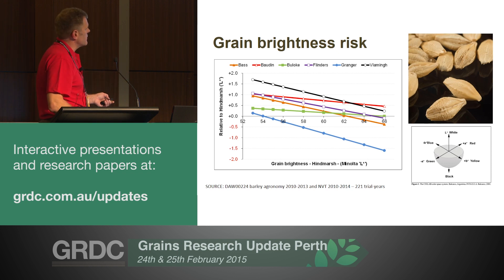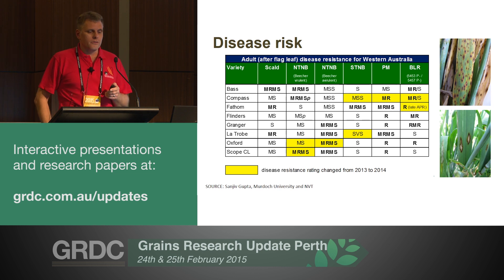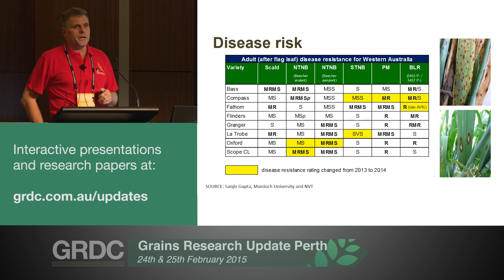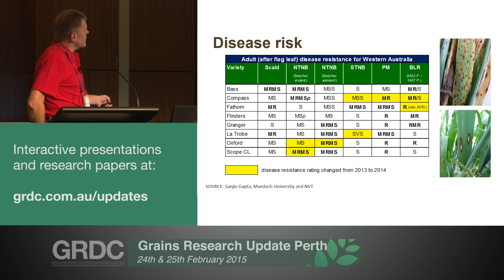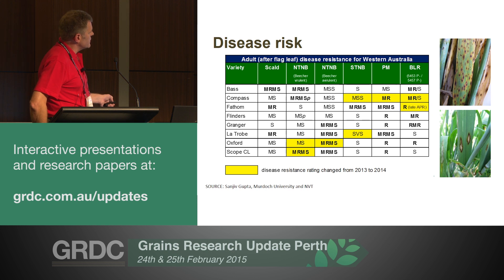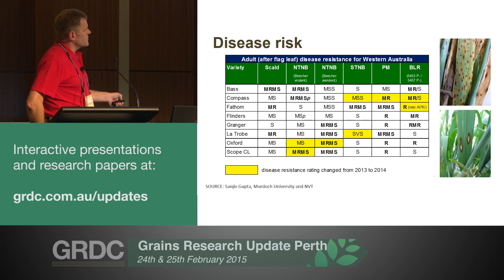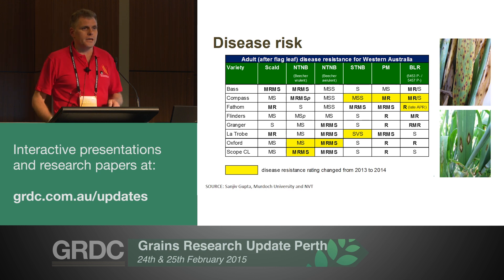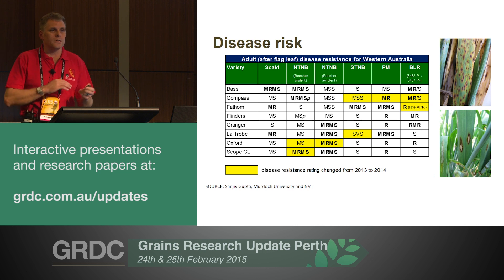Disease resistance is another trait to be aware of. Every variety has a weakness of some form. Granger is very good for barley leaf rust and powdery mildew but has a weakness for scald. Fathom is noted for its spot type net blotch resistance, but if you've got net form net blotch, there's a major risk. Latrobe is very sensitive to spot form net blotch. Bass and Compass are both sensitive to the new version of barley leaf rust. Understanding these weaknesses is critical in deciding which variety to grow.